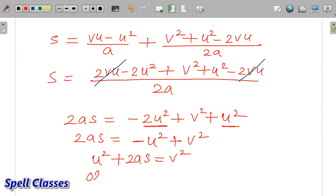Or v square equals u square plus 2as. This is known as the third equation of motion.